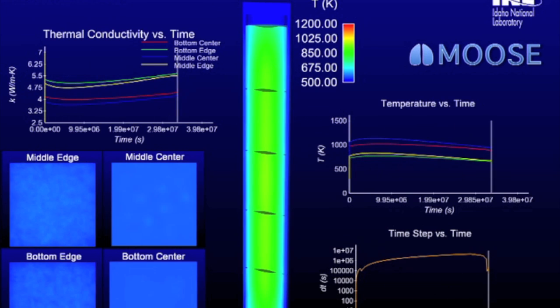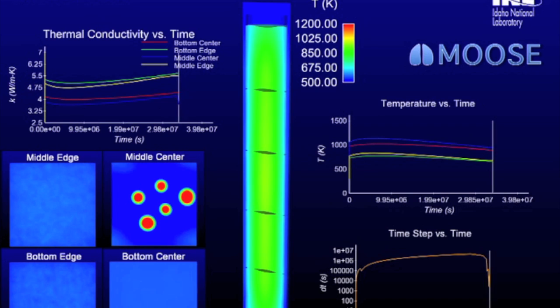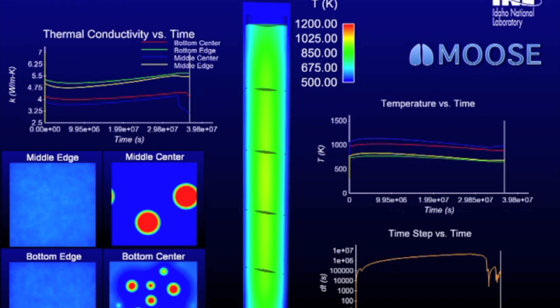As the microstructure evolves, you'll actually see that thermal conductivity go down. And that's really important for understanding how to get energy out of the system, your safety margins, and a lot of other processes.